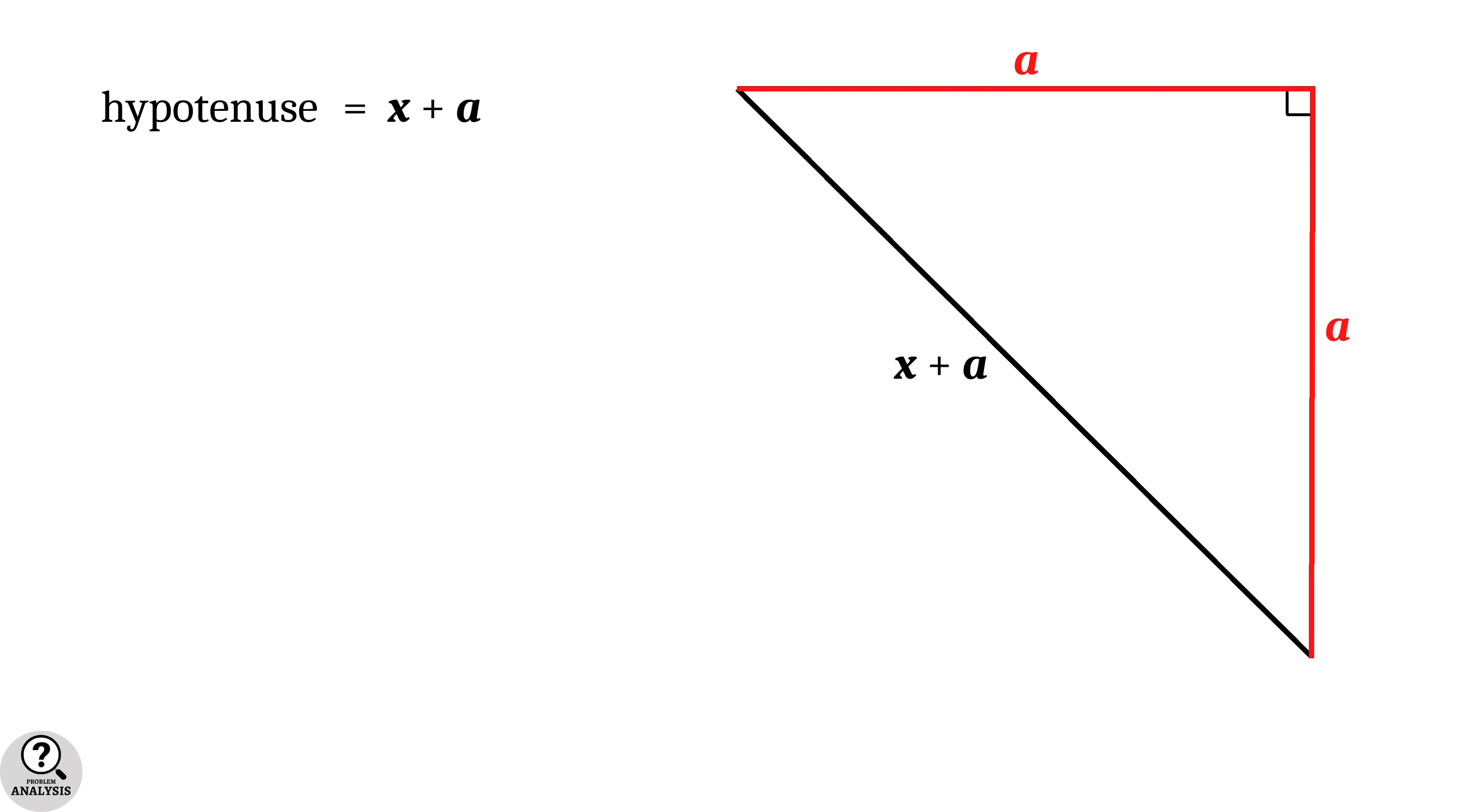Clearly its hypotenuse is x + a. But at the same time, it's a right triangle with the perpendicular sides equal, so the hypotenuse will be root 2 times that length. That is, here the hypotenuse is equal to root 2 times a. Therefore, x is equal to a root 2 minus a, that is equal to a(root 2 - 1).